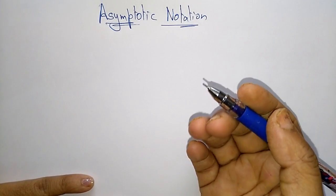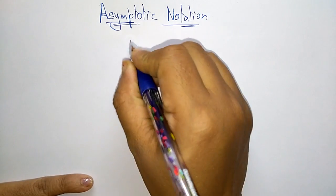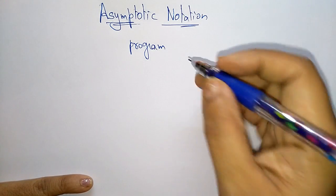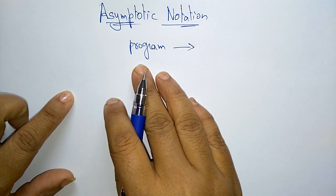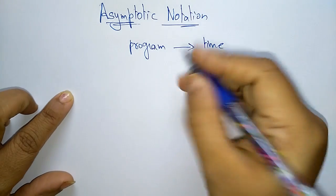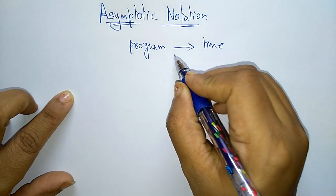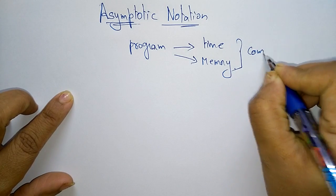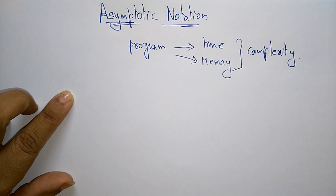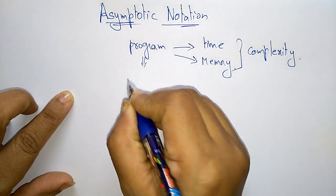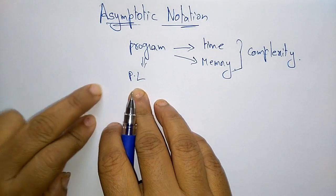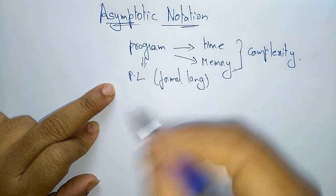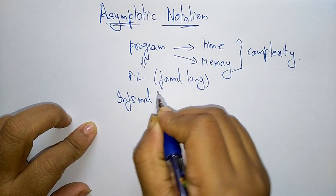Suppose you want to develop a program. That program will be evaluated based on the time it takes to execute and the memory it occupies — these are the complexities. Any program may be written in different programming languages, which are called formal languages. But before developing the formal language, you first develop an informal language, which is nothing but an algorithm.